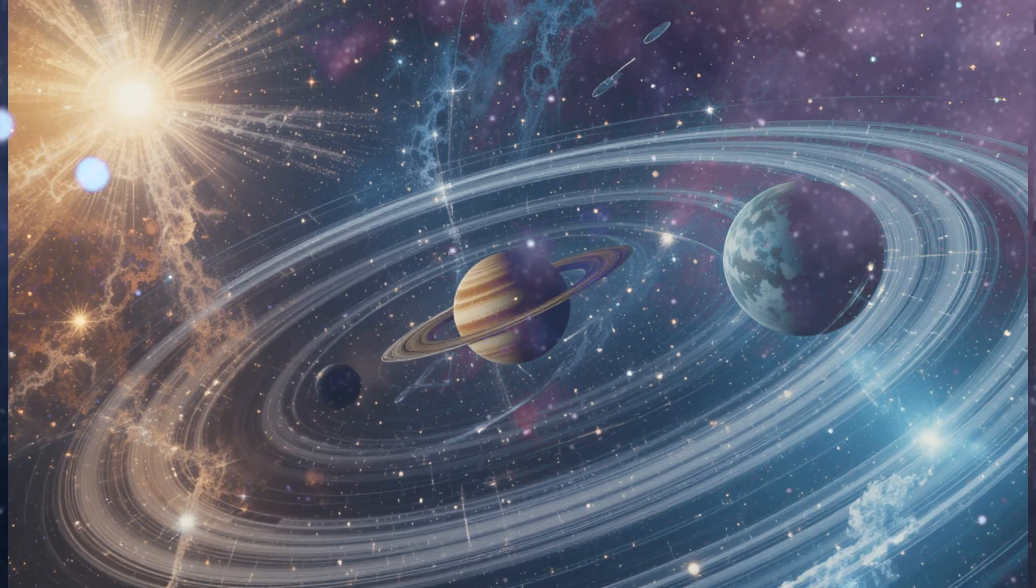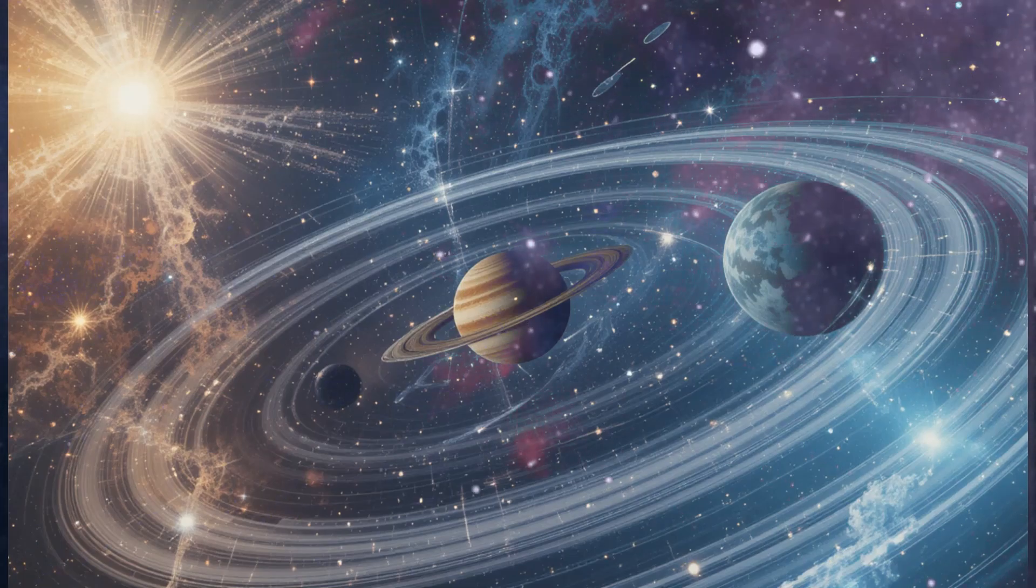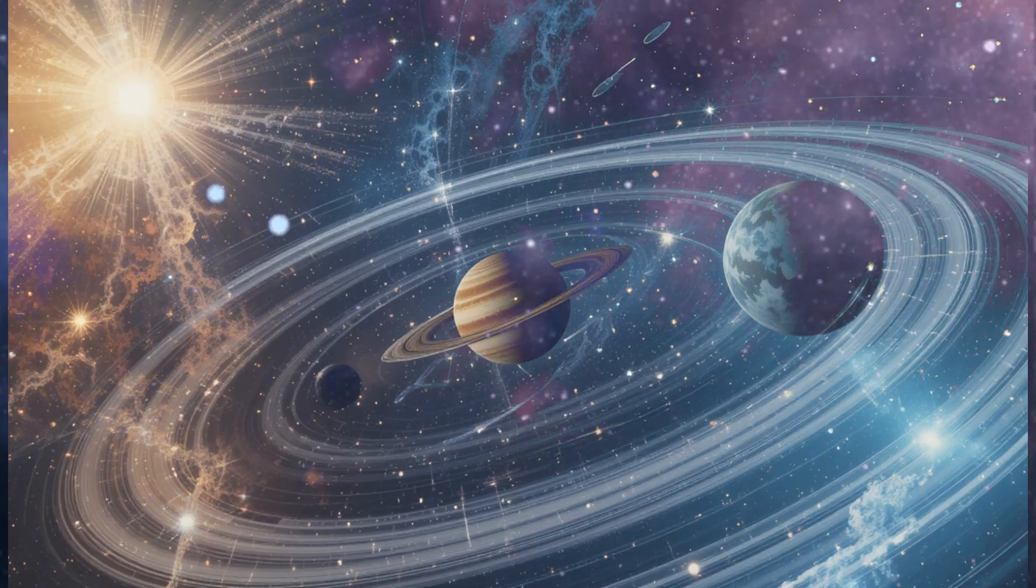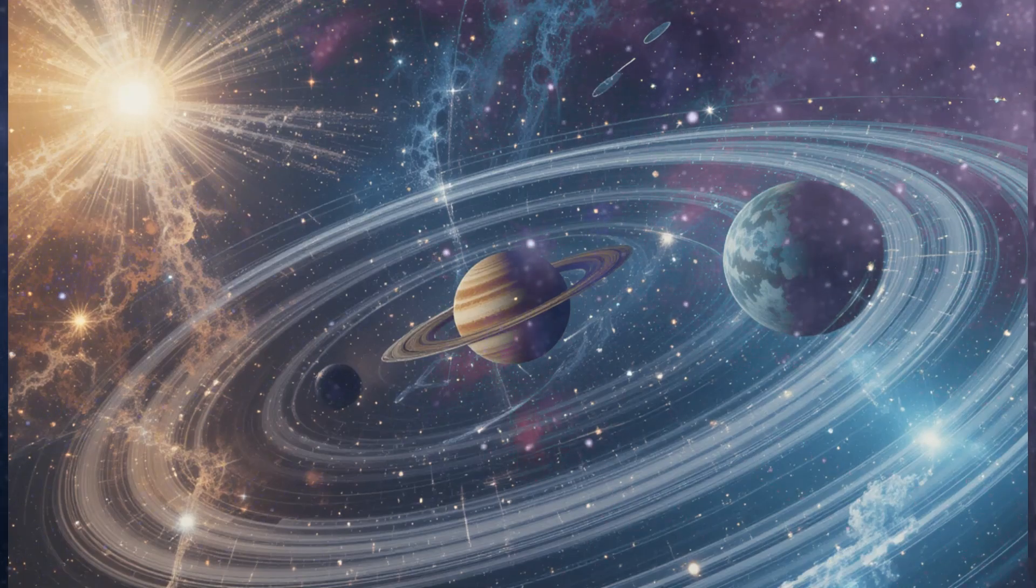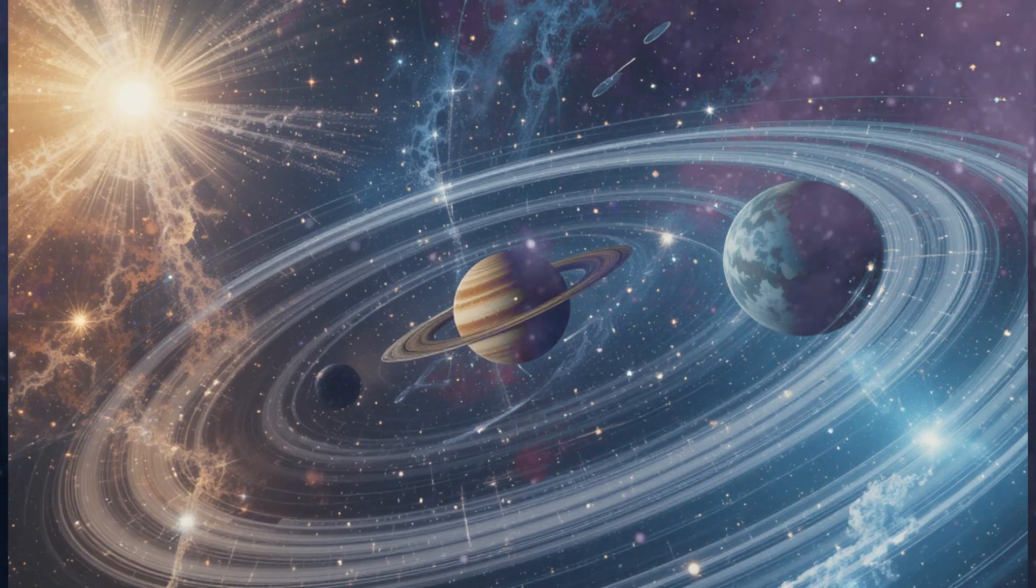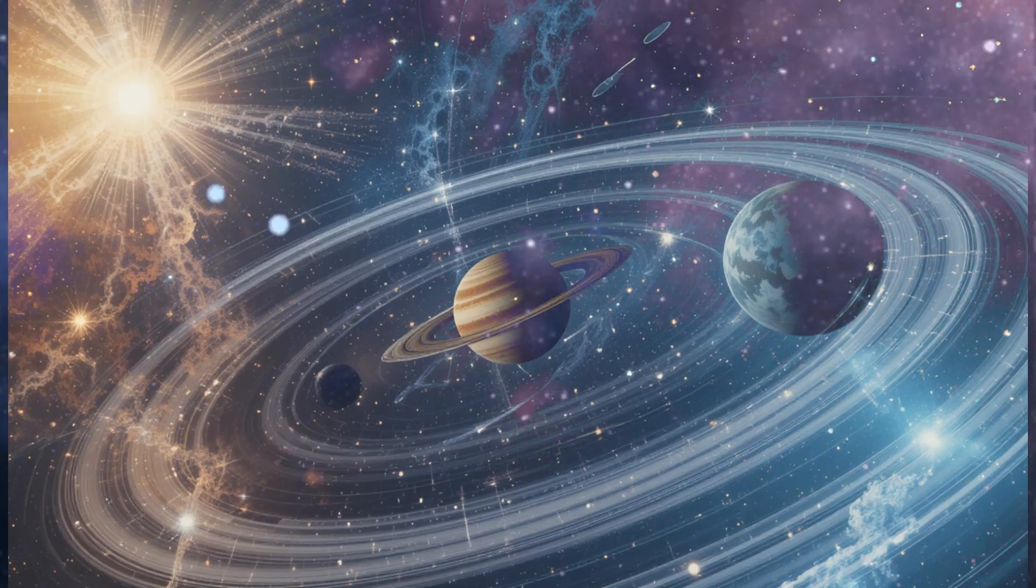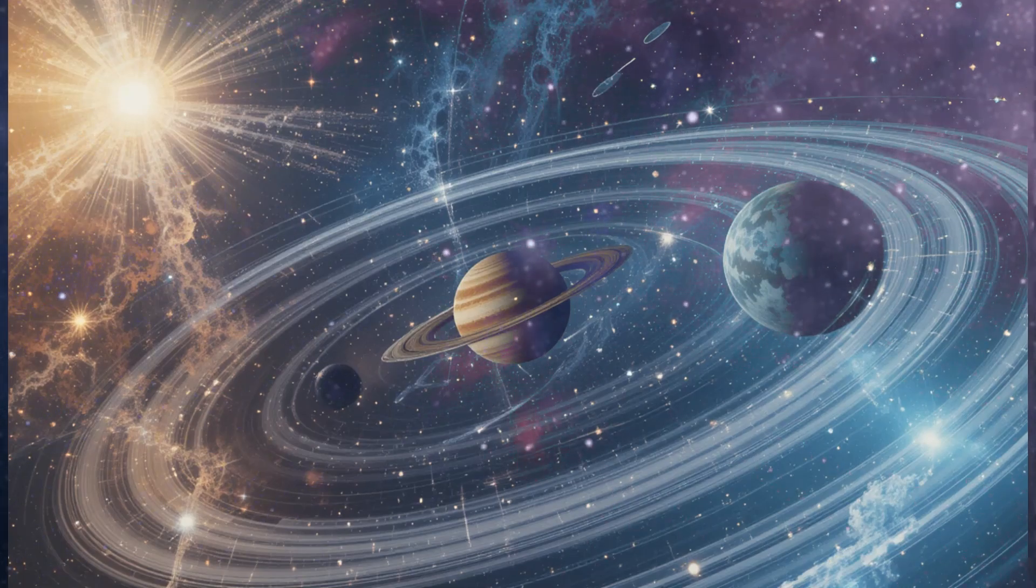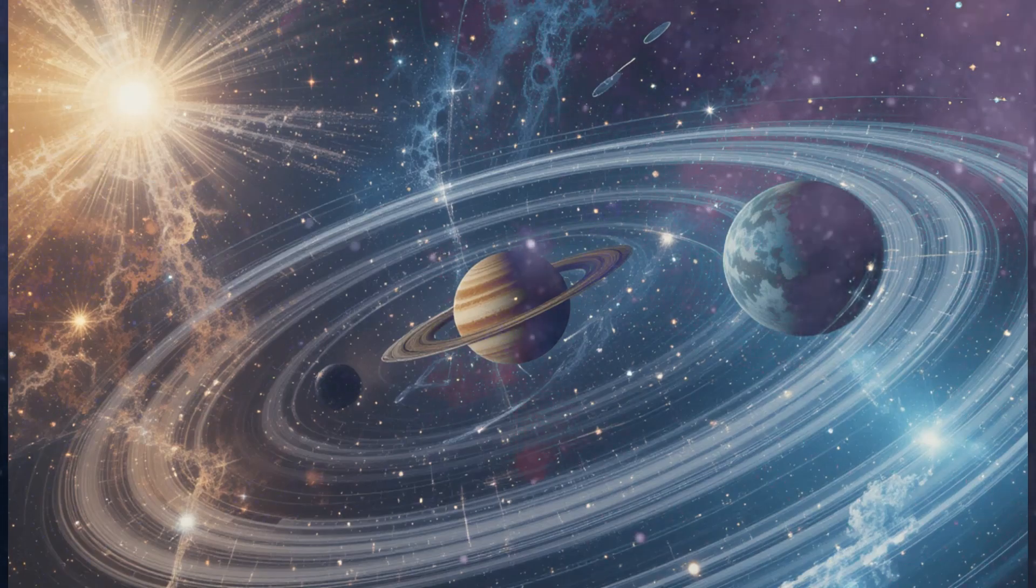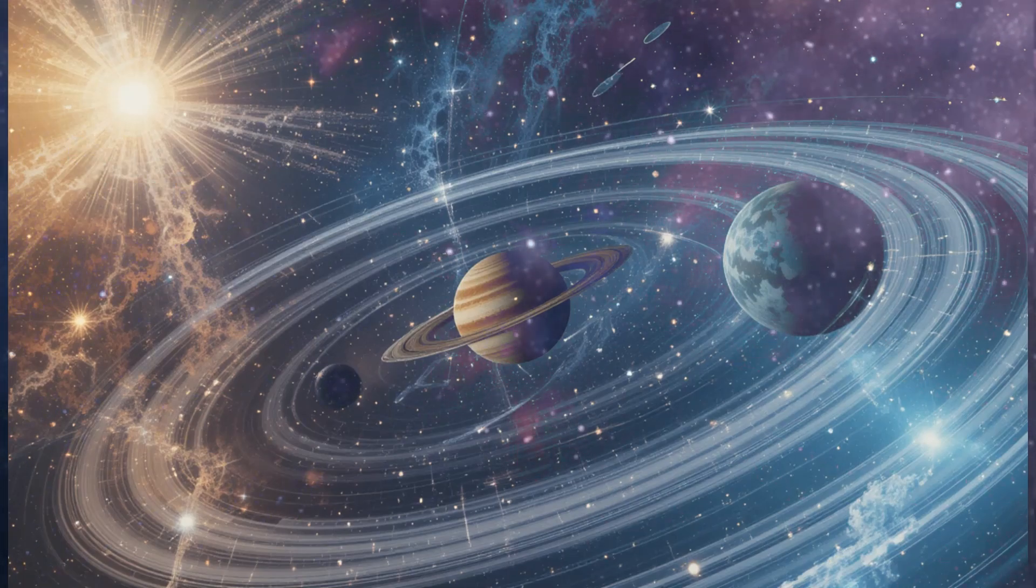Enter the James Webb Space Telescope, equipped with advanced infrared instruments that can look through cosmic dust. The JWST, working primarily in the infrared range, captures the oldest light in the universe and observes objects formed shortly after the Big Bang. Its infrared capabilities allow it to study star-forming regions, celestial nurseries, and the formation of stars hidden from optical telescopes.